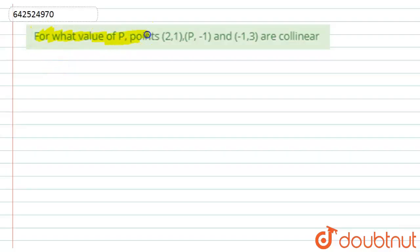Here we have given: for what value of P, the points (2,1), (P,-1), and (-1,3) are collinear? Okay, so here we have to find the value of P. So let's start with this solution.